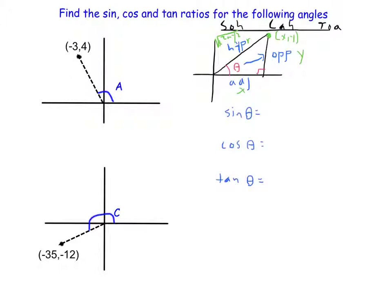Because remember, SOH CAH TOA: sine is the opposite over the hypotenuse, cosine is CAH, adjacent over hypotenuse, and tangent TOA is the opposite over the adjacent, and I know what these are equal to in terms of X, Y, and R.